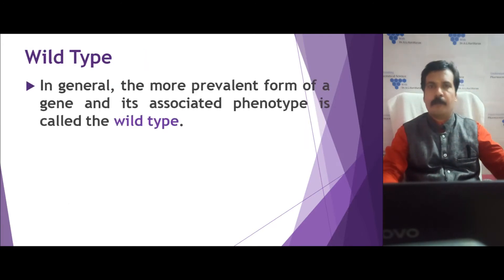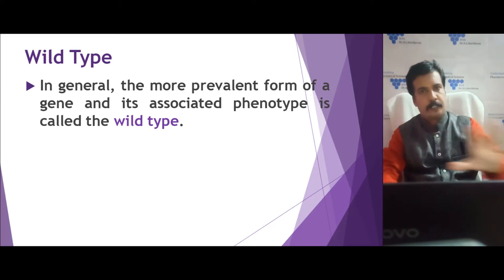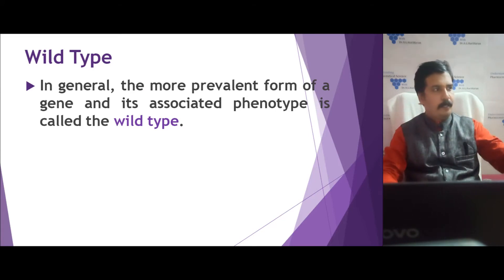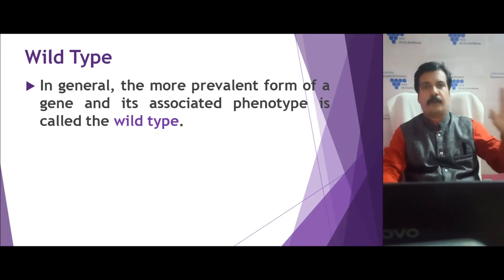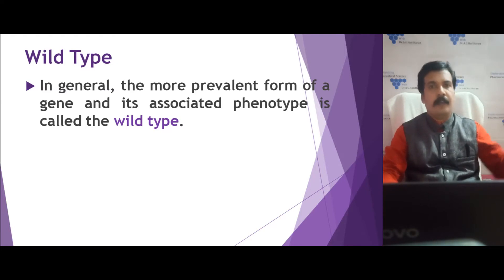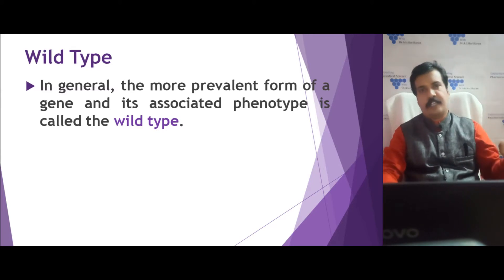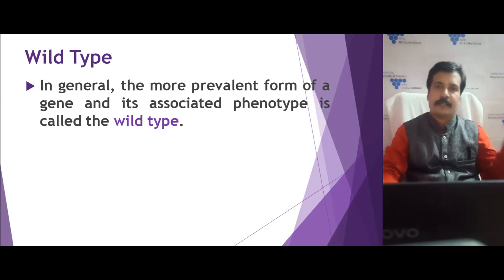Wild type refers to the most prevalent form found in nature — it carries a particular genotype. That particular genotype is associated with a particular phenotype, and it is naturally occurring. We call naturally occurring genes and their phenotype the wild type. If any alteration occurs in that gene and the phenotype changes, we call it a mutant type.